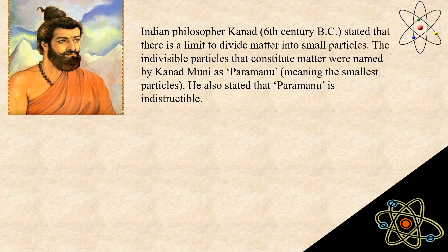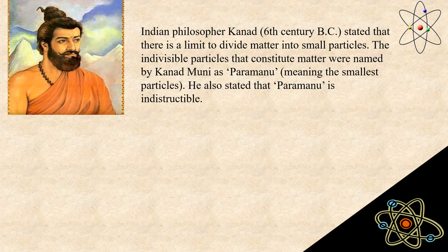Now let us understand about the history of the atom. It was an Indian philosopher, Kanad, in the 6th century BC, who stated that there is a limit to dividing matter into small particles. The indivisible particles that constitute matter were named by Kanad Muni as Pramanu, meaning the smallest particle. He also stated that Pramanu is indestructible.